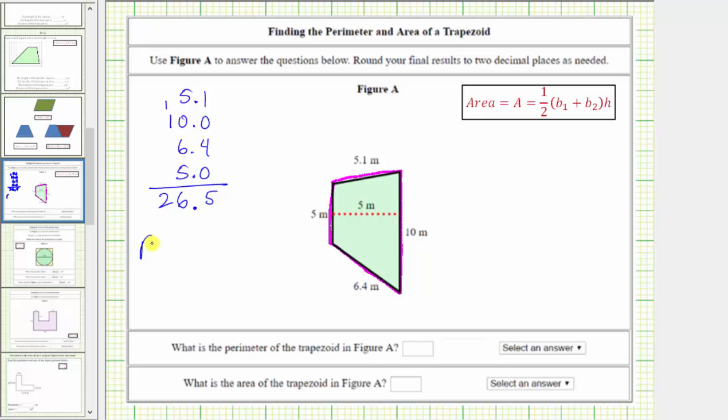Which means the perimeter of the trapezoid is 26.5 meters. So below, we enter 26.5, and here we select the units, which we know as meters.